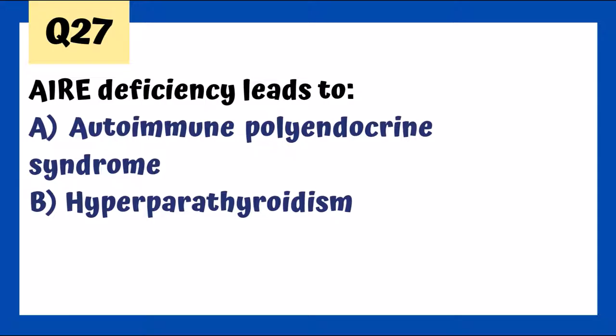An AIRE deficiency leads to autoimmune polyendocrine syndrome, which involves chronic mucocutaneous candidiasis, hypoparathyroidism, adrenal insufficiency, and recurrent candida infections. It's a very rare disease — in America it affects about one out of three million babies, meaning only about one baby per year in the entire US is born with this.